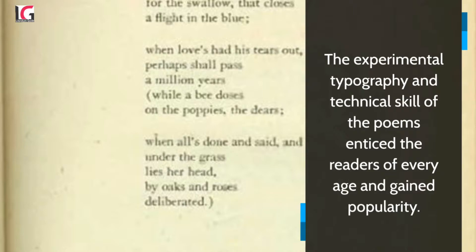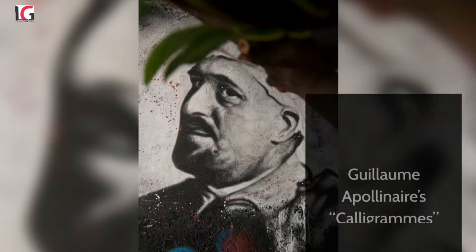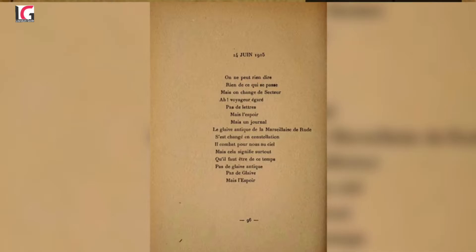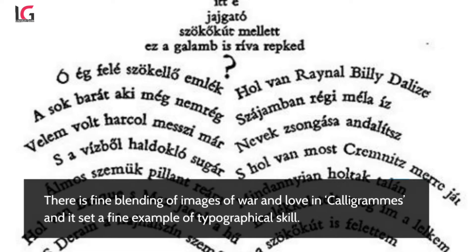Stéphane Mallarmé made use of different type sizes in his work Un Coup de Dés, A Throw of Dice, in 1897. Guillaume Apollinaire's calligrams can be deemed as the quintessence of pattern poetry, in which the words are arranged in an artistic fashion to form a pattern implying the main theme of the poems. His collection of poems Calligrams appeared in 1916 and deals with the poet's experiences as a soldier. There is a fine blending of images of war and love, setting a fine example of typographical skill.